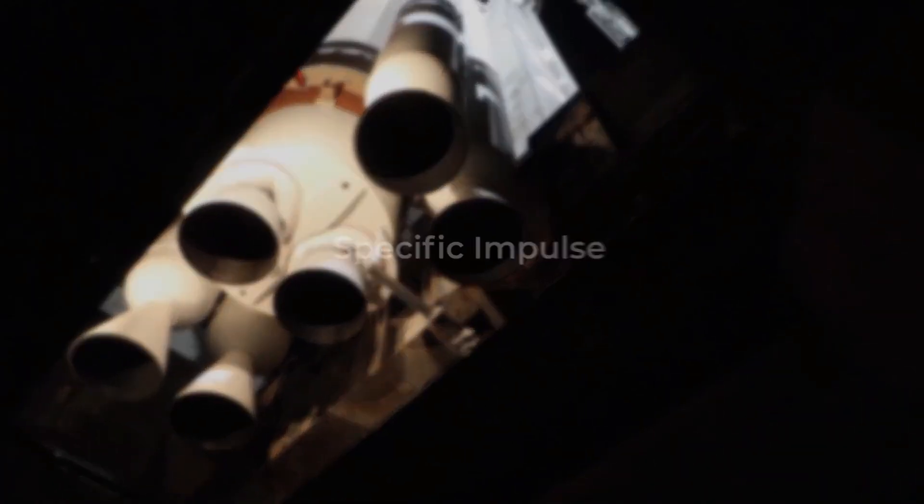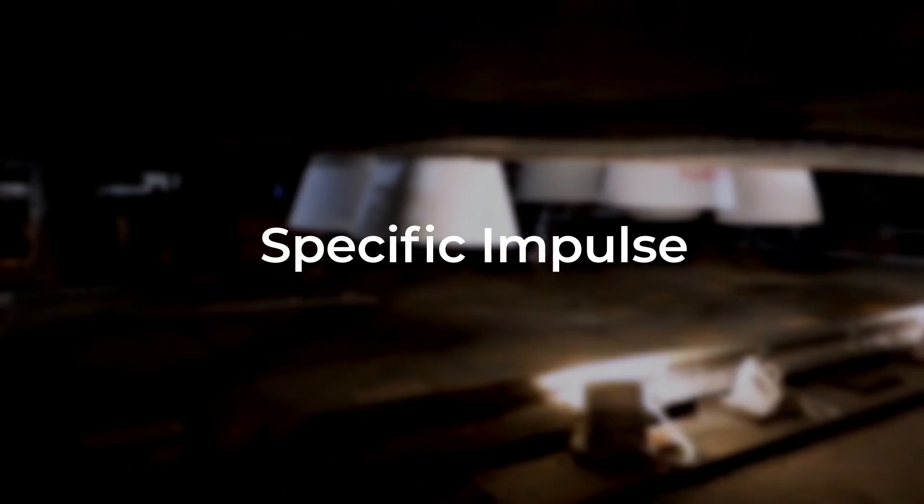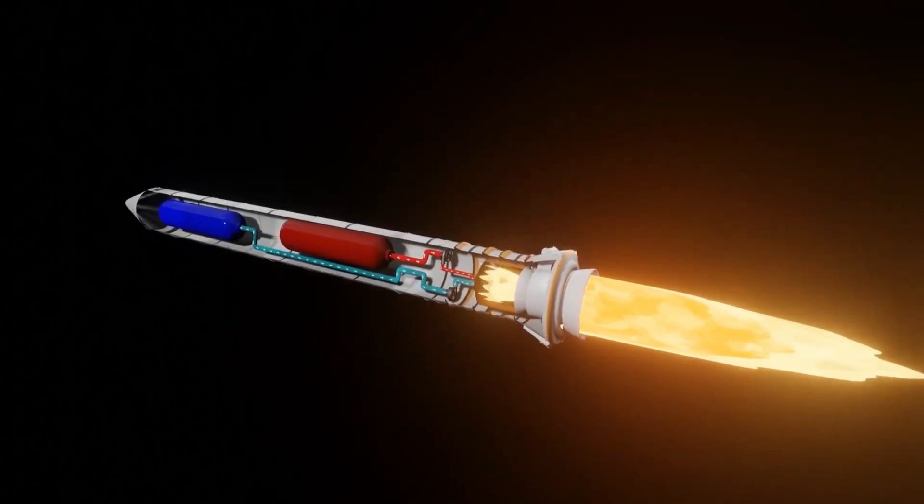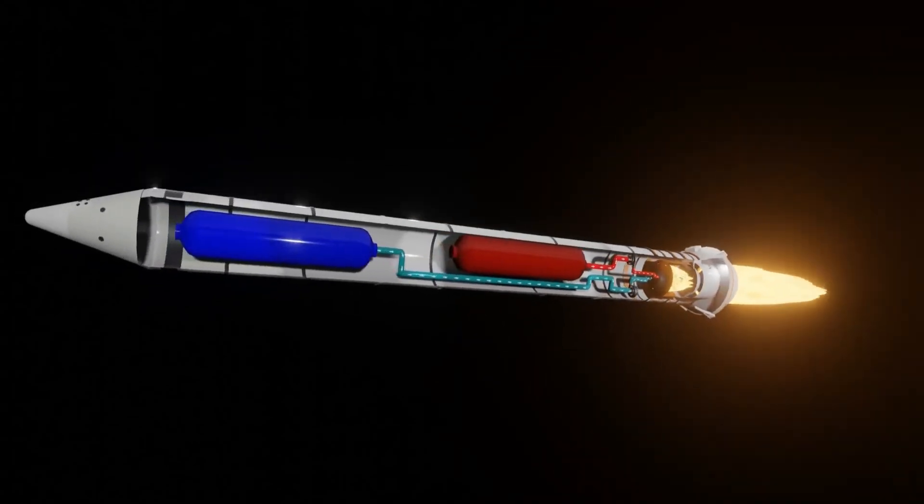To measure the efficiency of any rocket, we use specific impulse. Specific impulse is thrust force upon flow rate. And the faster the rocket will release the fuel from the nozzle, the higher the efficiency of that rocket will be.